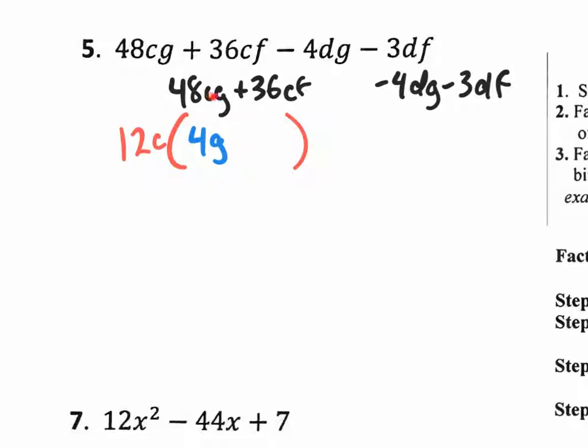Think about it. 12C times what gets you back to a 48CG? That would be a 4G. 12C times what would take you back to a positive 36CF? Well, 12C times, 12 times three would get you back to a 36. So you put a plus three.